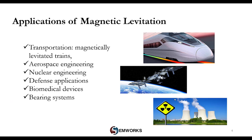The magnetic levitation technology is already attracting many countries. However, the technology most commonly associated with maglev in the public mind is high-speed maglev trains. Magnetic levitation is also applied in aerospace, nuclear, and military purposes. Additionally, there are innovative and futuristic ideas based on magnetic levitation such as Elon Musk's Hyperloop, flying cars, and personal rapid transit, being concretized faster thanks to CAD and simulation tools.